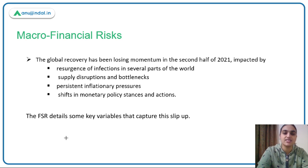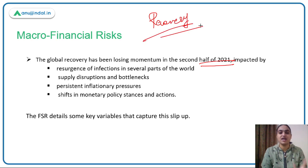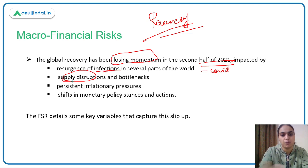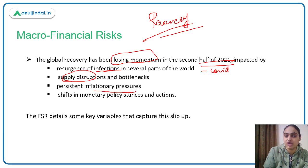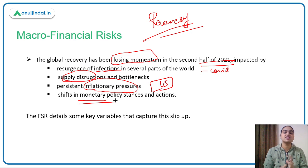Moving to Chapter 1 on macro-financial risks: the global recovery lost momentum in the second half of 2021. The risks include COVID variants emerging, supply-side disruptions impacting exports and imports, persistent inflationary pressures — inflation in the US reached a 30-year high — and shifts in monetary policy stances in various countries.